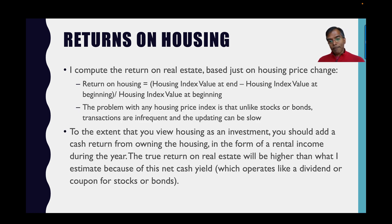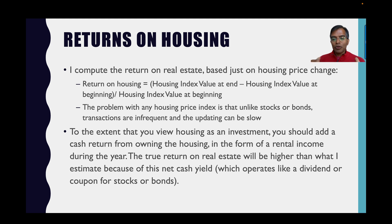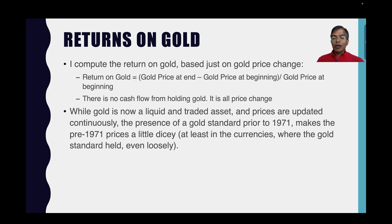For the return on housing, I simply take the housing index value at the end of the year, subtract the housing index value at the start, and divide by the value at the beginning — so it's a percentage change in housing price. Now that might not be a fair assessment of returns in housing because it captures only the price change component. What's missing? If you bought the house and rented it out, you'd get rental income over the course of the year, similar to dividends or coupon income on a financial asset. That is not being counted here because there is no easy way to bring in rental income going back that far in time. So when you look at the returns on housing, recognize that I'm missing the cash income component of the return.